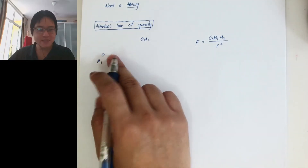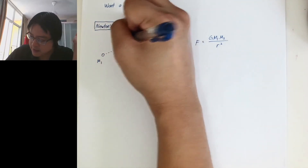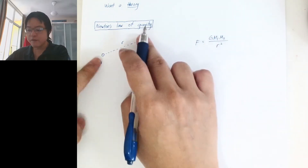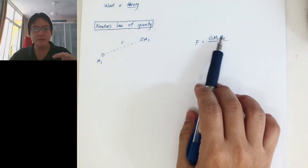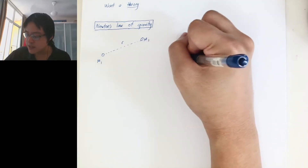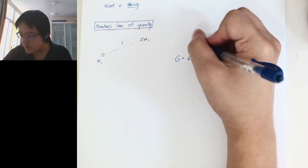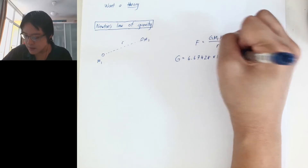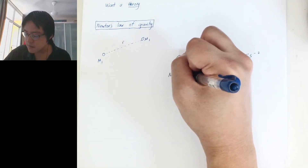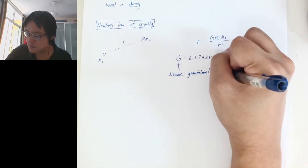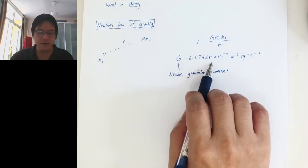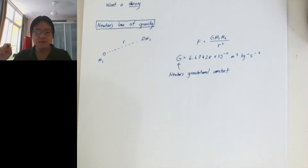If the distance is r, whatever that is, is divided by r squared — so the further apart the two objects, the weaker the force; if very near, the force keeps becoming stronger. It depends on M1 times M2 — whoever is larger, the force is also stronger. Then there's G here: the gravitational constant G is 6.67428 times 10 to the minus 11 meters cubed kg minus 1 second minus 2. We can calculate its value either by observing data or by doing an experiment. This is Newton's law.